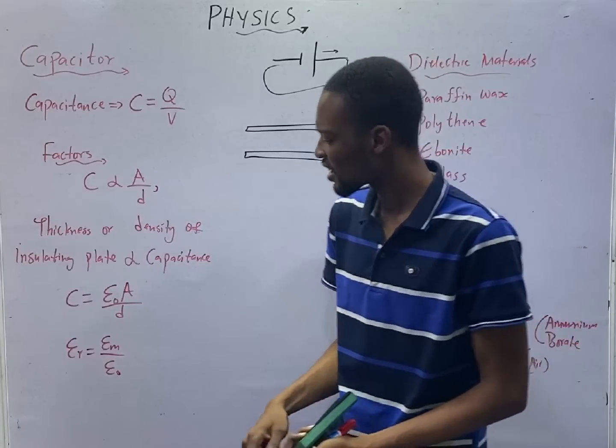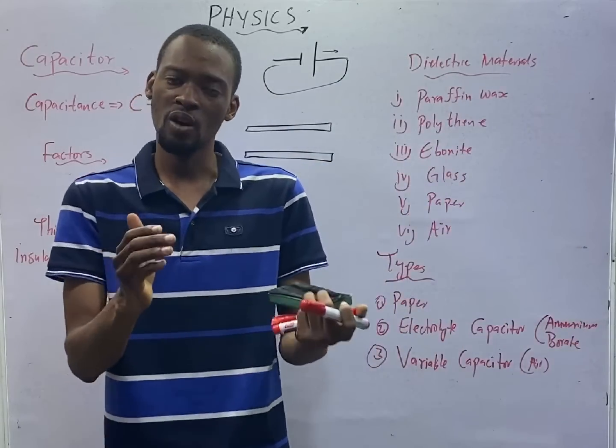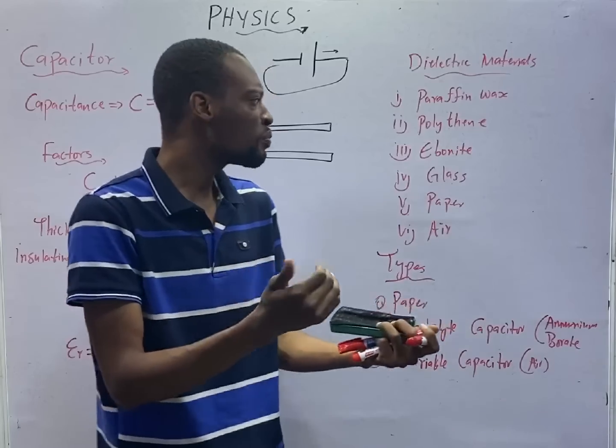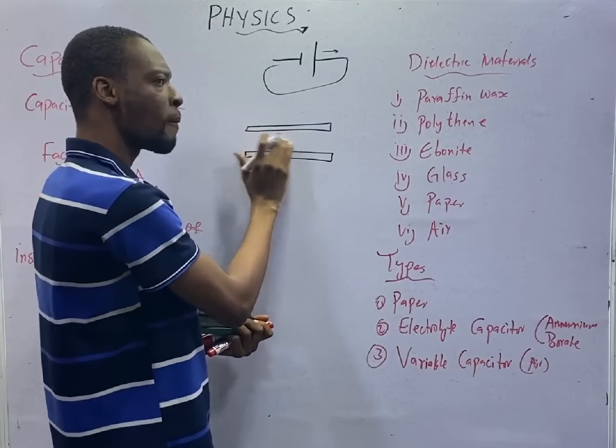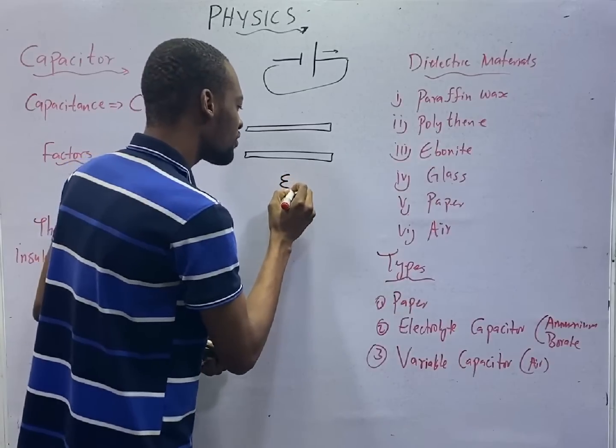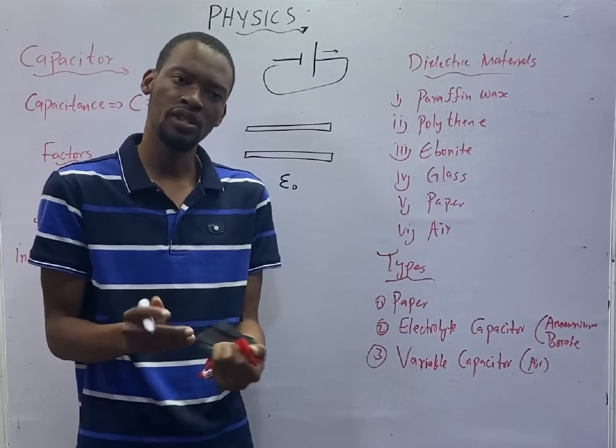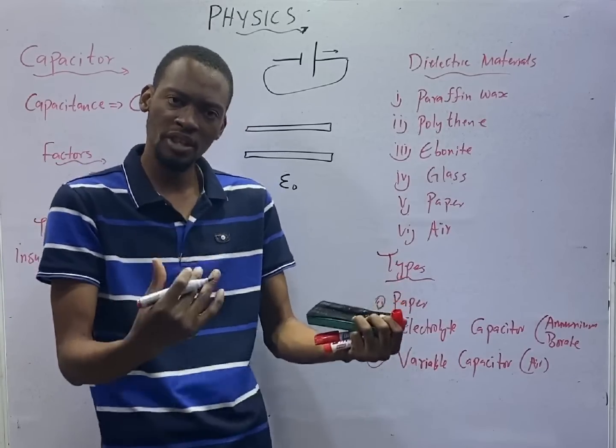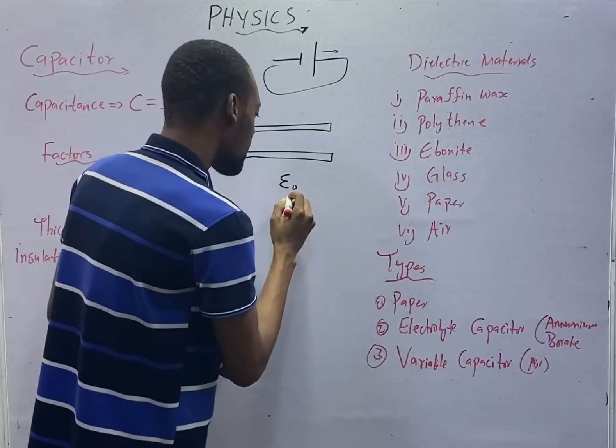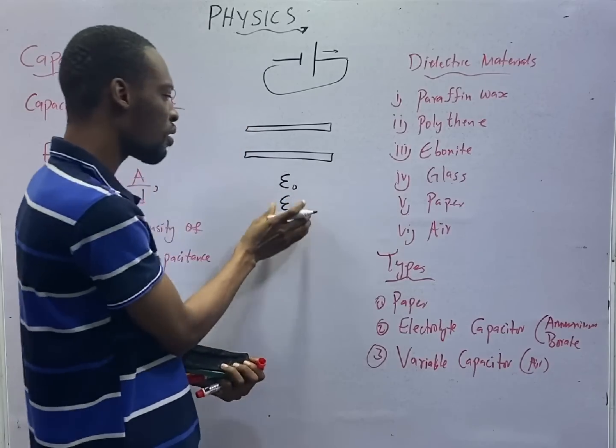Dielectric constant. And dielectric constant can be in air or vacuum, and it can also be in medium. If we are dealing with air, we simply have E naught. E naught is a constant which we shall be given in questions. If you are dealing with a particular medium, then you say the dielectric constant is E of a medium.